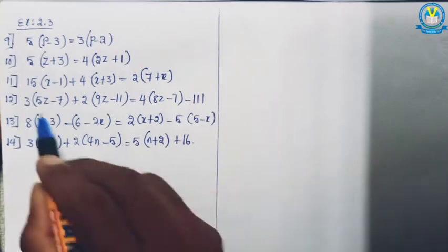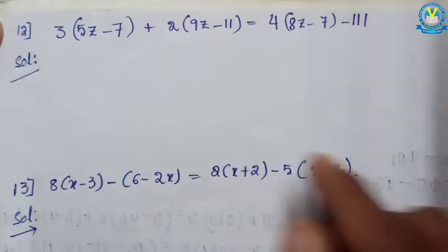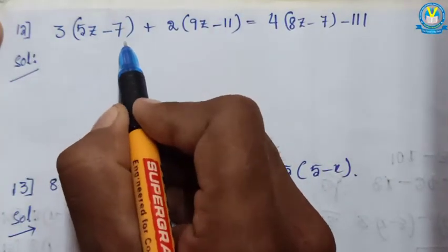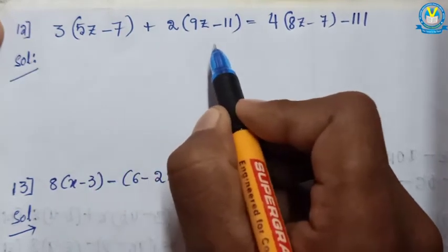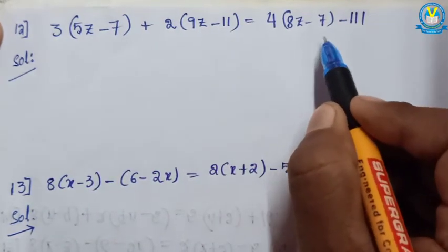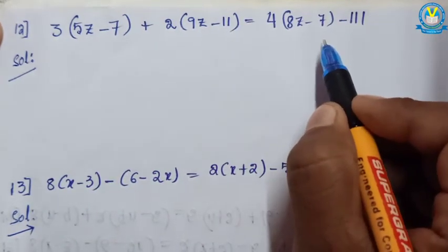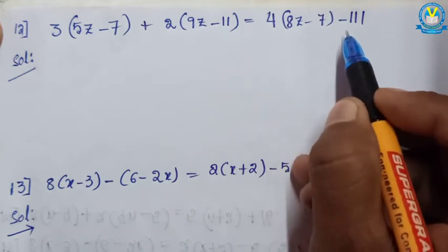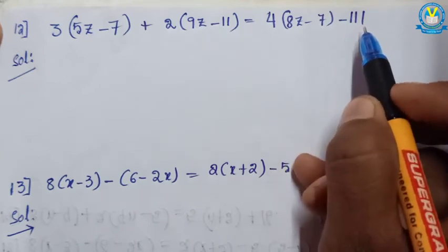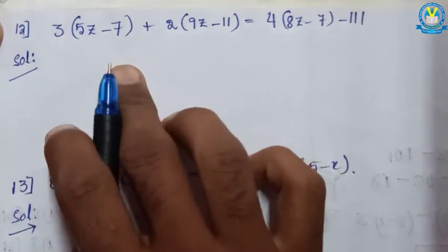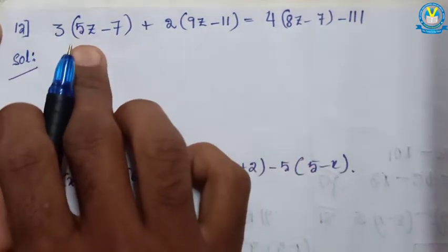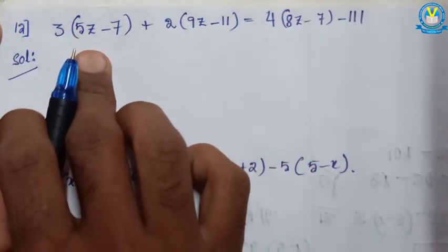Moving to the 12th question: 3 into (5z minus 7) plus 2 into (9z minus 11) equal to 4 into (8z minus 7) minus 1. Observe this equation. Here 3 multiplies both the variable 5z and 7.